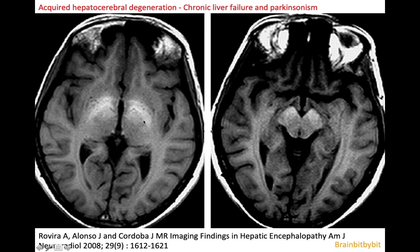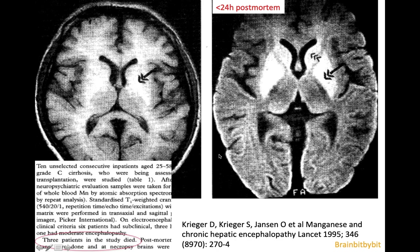We know it is manganese in the basal ganglia because of a very nice study in the Lancet from a German group in 1995. They looked at 10 patients with severe liver cirrhosis on the transplantation list, performed neuropsychiatric tests and MRI, and three patients died before receiving a transplant. On the post-mortem MRI, there is increased T1 signal not only in the pallidum, but also in the putamen and caudate, and necroscopy confirmed it was caused by manganese.